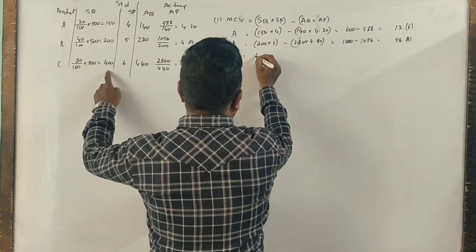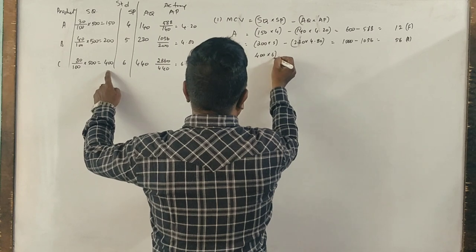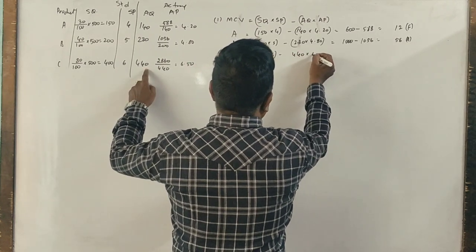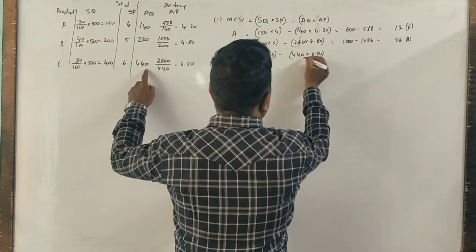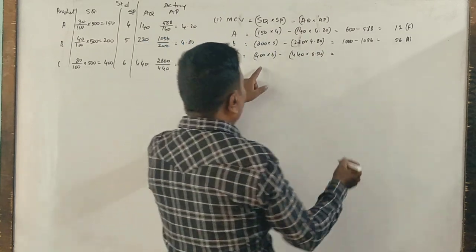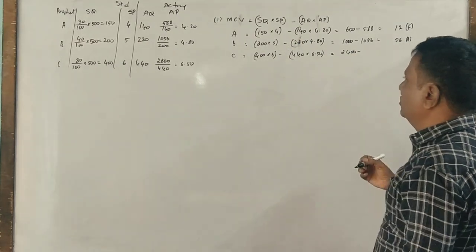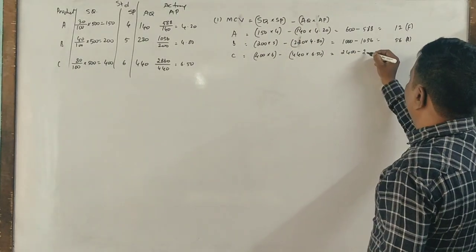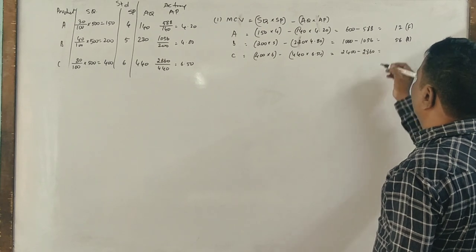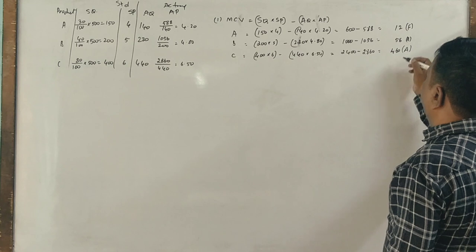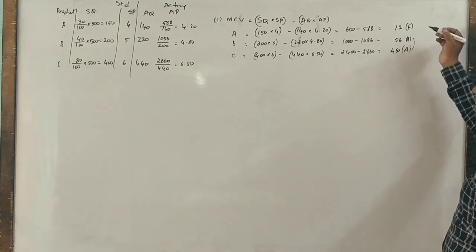C - 400 into 6 minus 440 into 6.5. 2,400 minus 2,860 is 460. 460 is adverse.